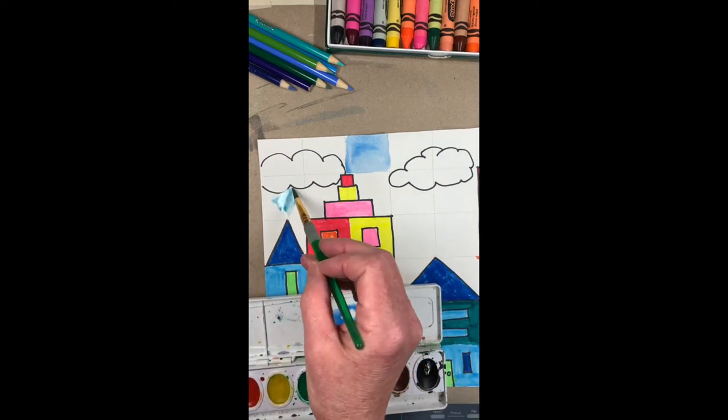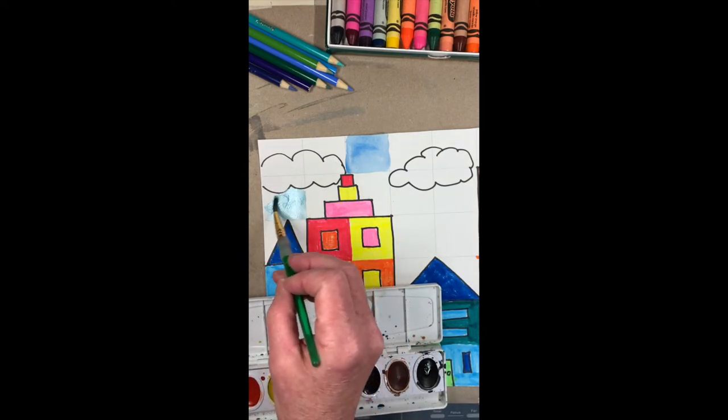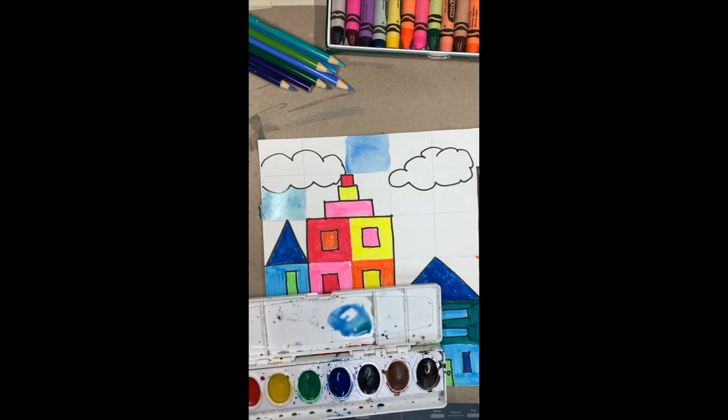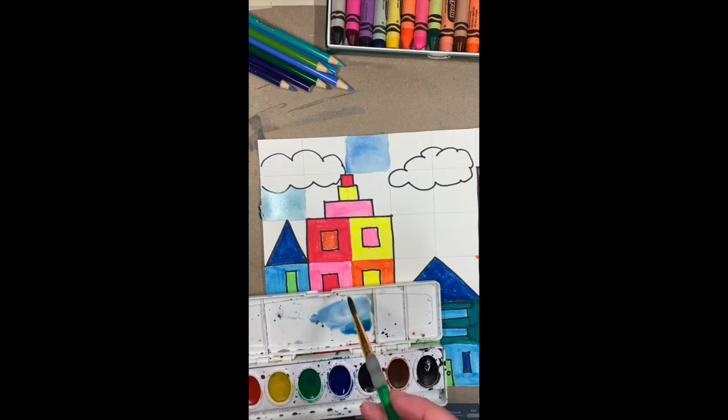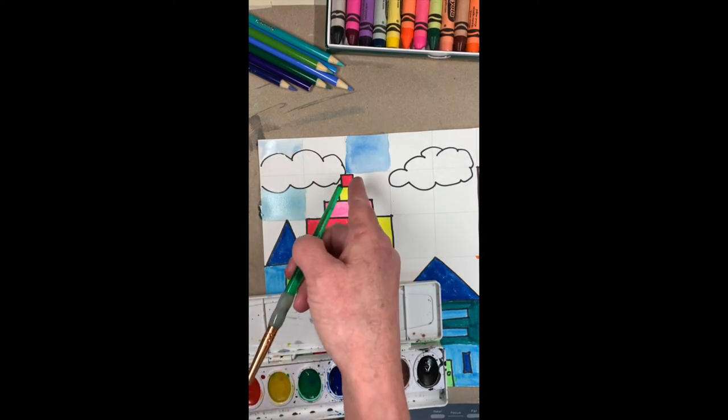This one looks the same as the other one I just painted. And then I could, if you want to make a lighter blue, all you have to do is add water and you can make a really light blue. I'm just waiting for this to dry before I go painting another color next to it.